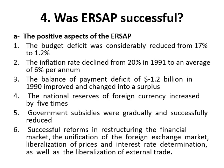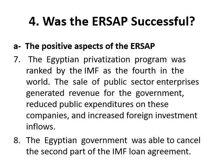Government subsidies were decreased and reduced. There was successful reforming and restructuring of the financial market and unification of the foreign exchange market. The Egyptian privatization program was ranked by the IMF as fourth in the world. The sale of public sector enterprises generated revenue for the government, reduced public expenditure on these companies, and increased foreign investment inflows.